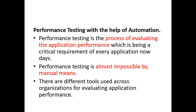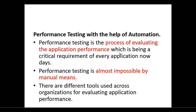The next scope is performance testing with automation. Performance testing is the process of evaluating the application's performance, which is a critical requirement for every application nowadays. Performance testing is almost impossible by manual means. There are different tools used across organizations for evaluating application performance. These are the two branches in the scope of automation: functional testing and performance testing.